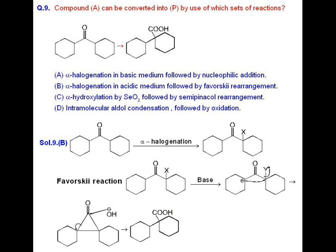in step 1, alpha halogenation will be conducted and after that, in presence of base, Favorskii reaction will take place and the 3-membered ring will be formed and under basic conditions,